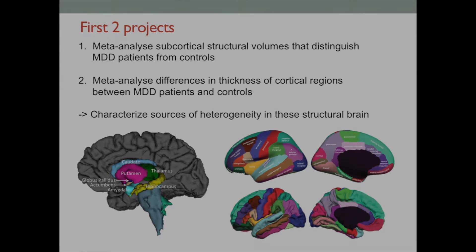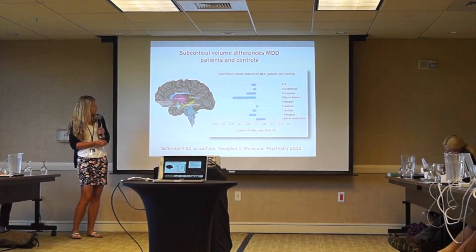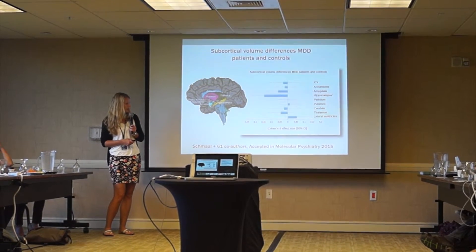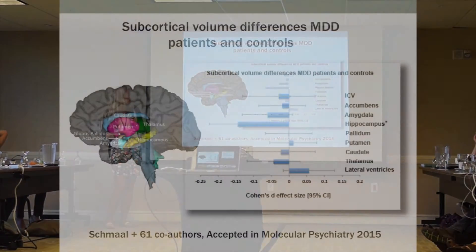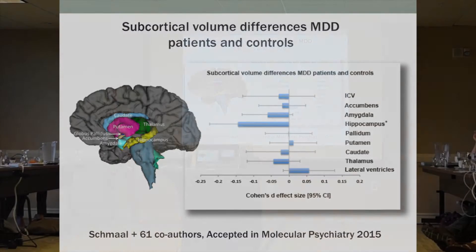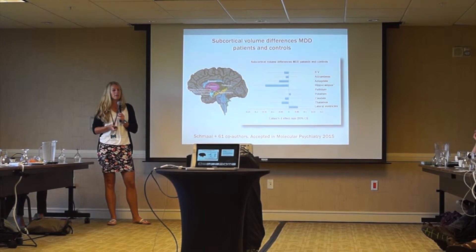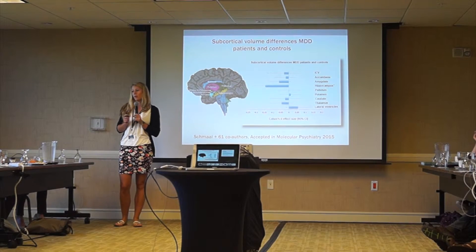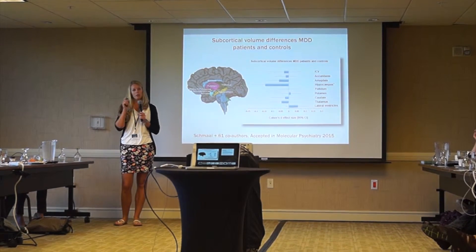The subcortical meta-analysis — as Paul already mentioned, our first paper is currently in press in Molecular Psychiatry. The main finding, which was quite interesting compared to schizophrenia and bipolar disorder, is that we only found differences between patients and controls in the hippocampus and not for other regions. When we looked into clinical associations and clinical characteristics a bit further...